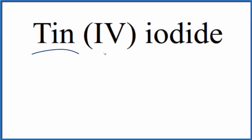To write the formula for tin four iodide, let's first write the element symbol for tin, that's Sn. This Roman numeral four in parentheses means tin is 4+. Iodide comes from iodine.